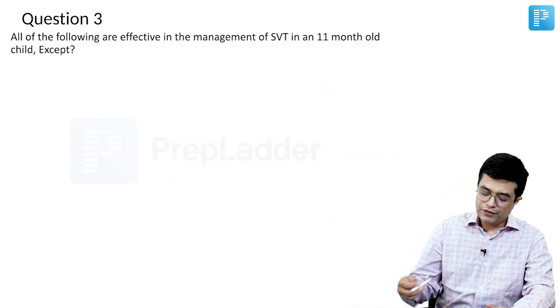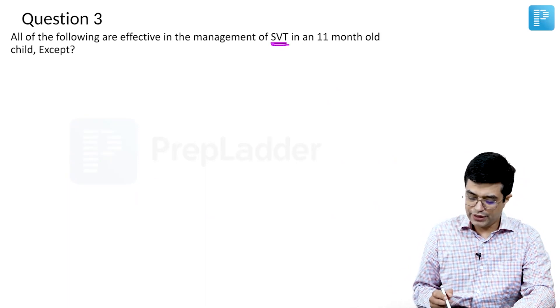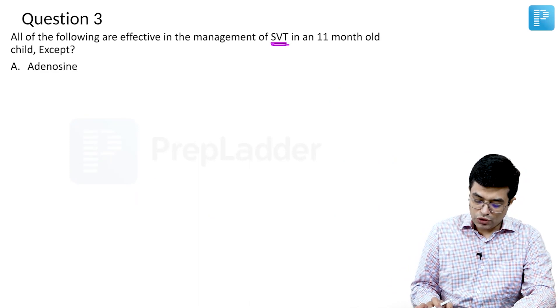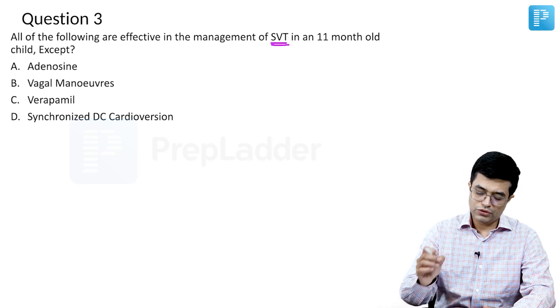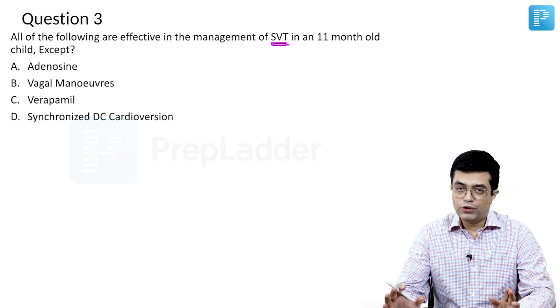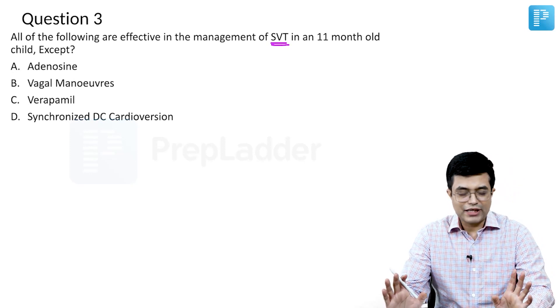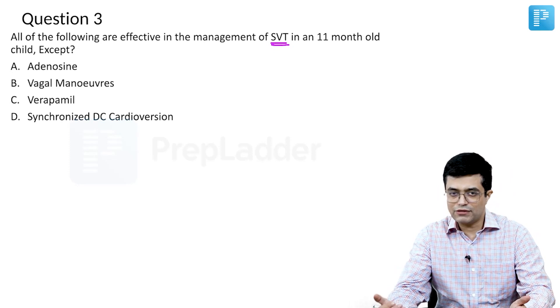Moving to question number three. All of the following are effective in the management of supraventricular tachycardia in an 11 month old child except, the age is important here. So what are the four options they have given? Adenosine, vagal maneuver, verapamil and synchronized DC cardioversion. If you know the management of SVT, you will know that all four conditions have been described to be useful in the management according to PALS guidelines as well as NELSI.